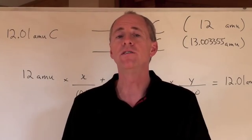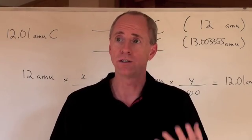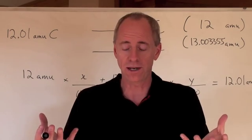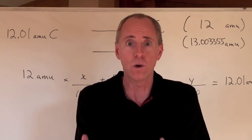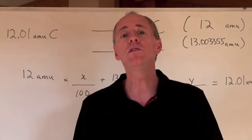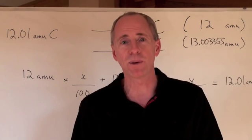How do scientists determine what these molar masses are in terms of taking isotopes and identifying in a given sample how much of it is a percent of one isotope as opposed to another? Well, they use a machine called a mass spectrometer.